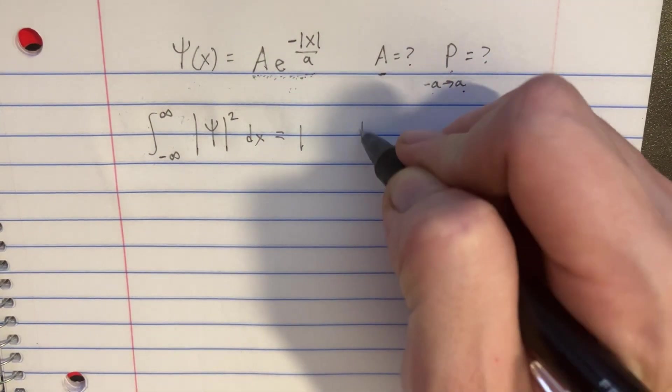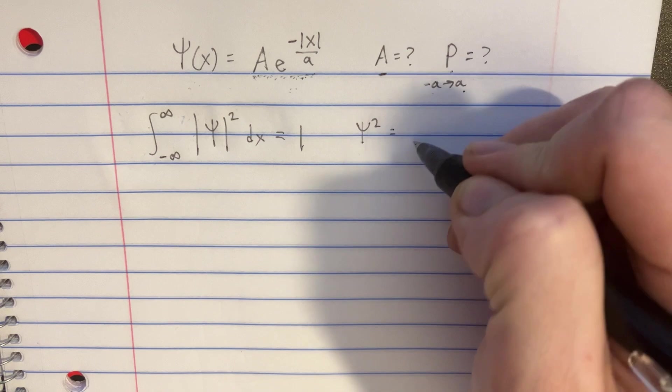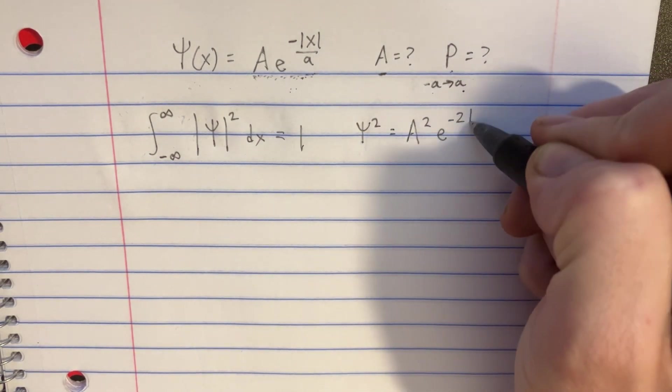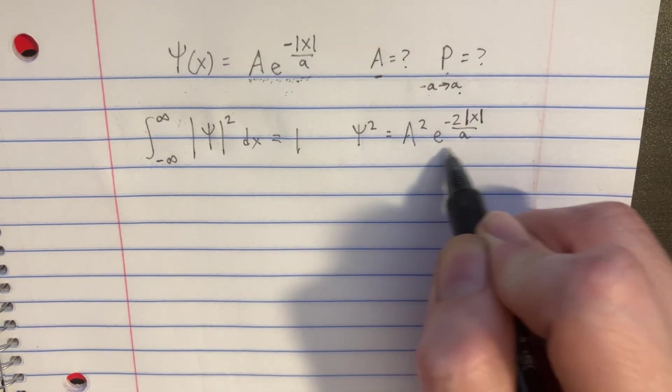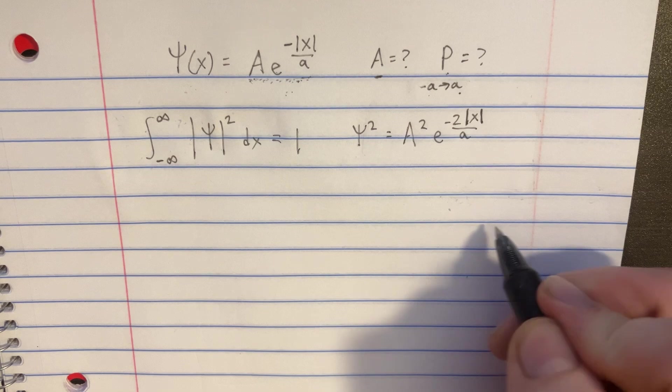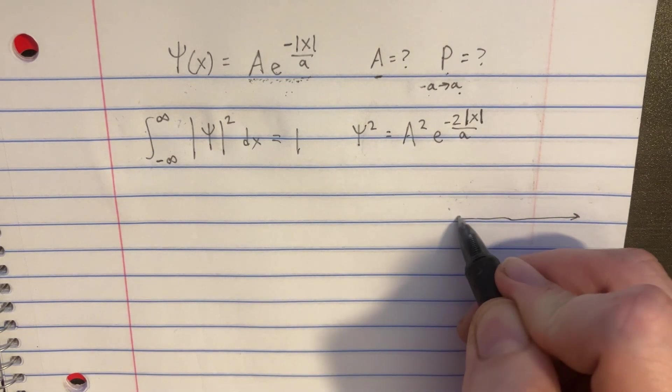Now, if we were to square this wave function, then we would see it's just A squared e to the negative 2 absolute value of x over a right there. And before we set up the integral, let's realize that we do have the absolute value here, so we have to be really careful about how we set that up.